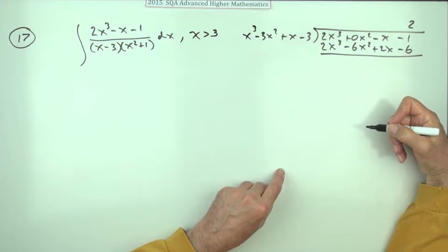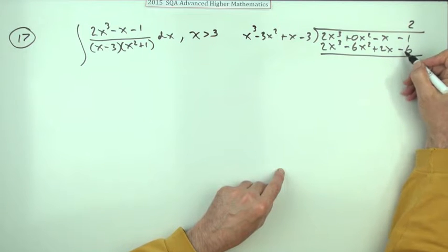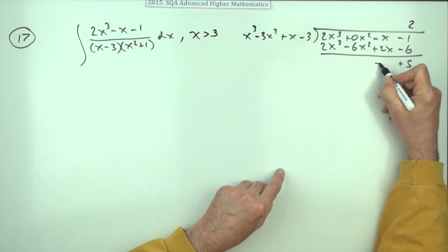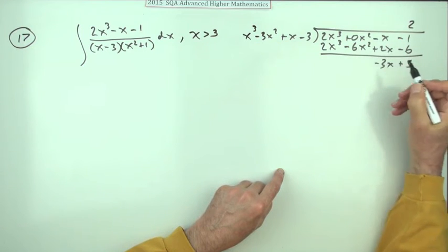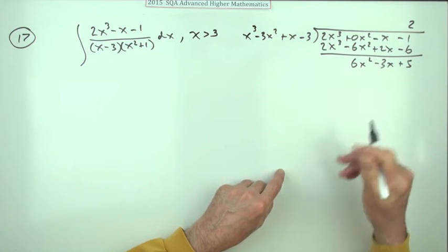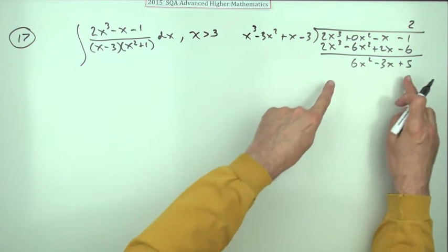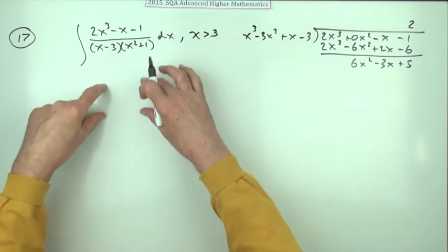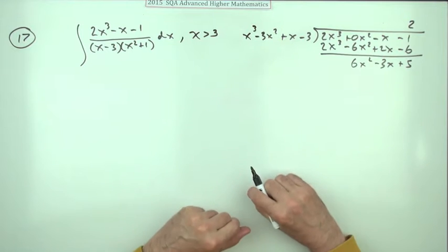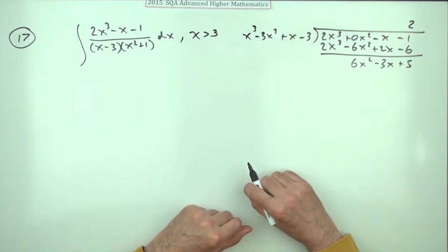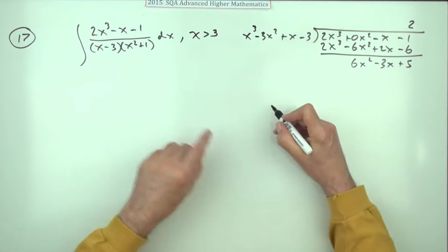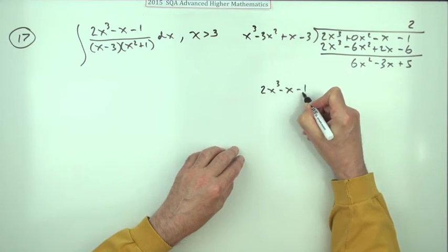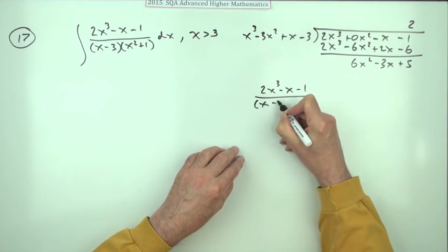Top take away bottom gives negative 1 plus 6, which is plus 5. Negative x take away 2x is negative 3x, and 0 take away negative 6 is 6x². Rather than feeding this all in and continuing to write down the integration sign, I'll do the partial fraction bit over here. The problem is then this expression: 2x³ - x - 1 over (x - 3)(x² + 1).